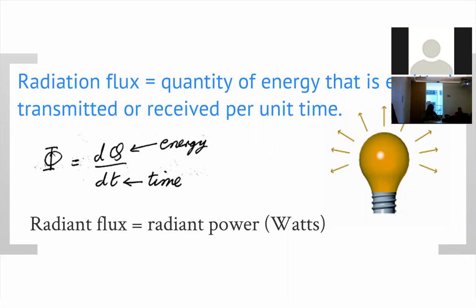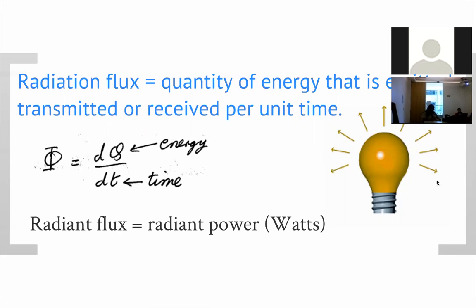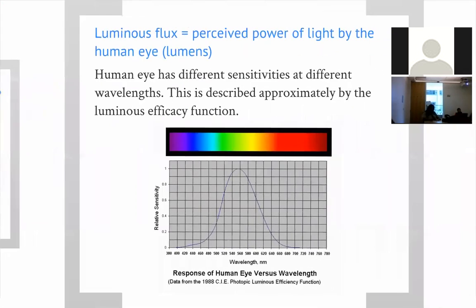Let's start with radiation flux, something we're very familiar with. This is the quantity of energy emitted, transmitted, or received per unit time. The sun emits it, a window transmits it, a solar cell receives it. Capital Phi equals dQ/dt, where dQ is energy and dt is time. For a lamp, it's the total power — joules per second — so radiant flux is measured in watts.